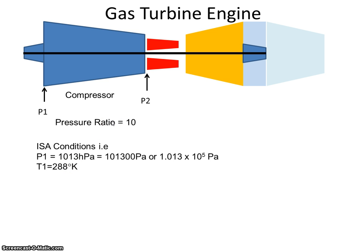Well if the pressure ratio is 10, then the outlet pressure is going to be 10 times the inlet pressure. So P2 is 10 times what the inlet pressure was, which is 1.013 times 10 to the power of 6. So it's going from 5 to 6. So that's the outlet pressure of the compressor.